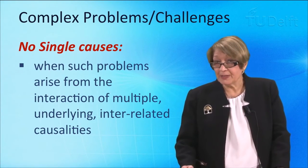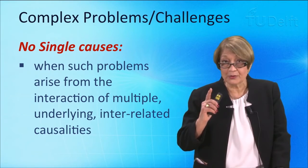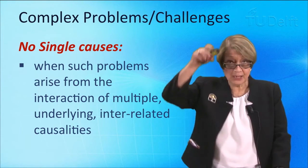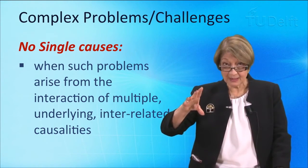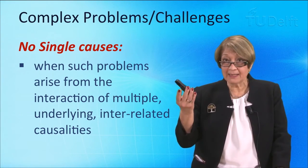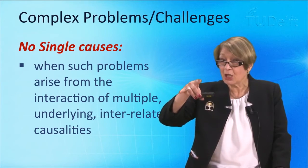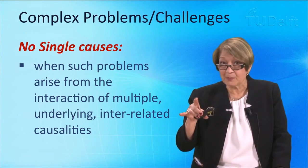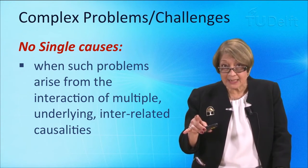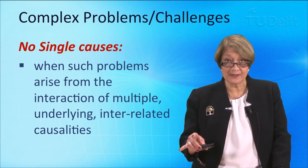The other point is we very often focus on a single cause. We say A causes B. So if I were to drop this, it would fall because of gravity — I can explain that as linear causality. Complex problems cannot be explained in that way. They have multiple interacting, co-evolving causalities.